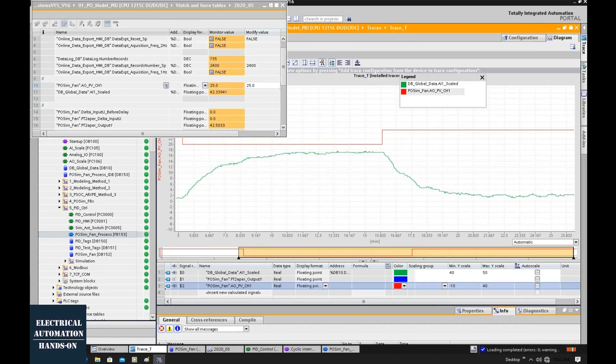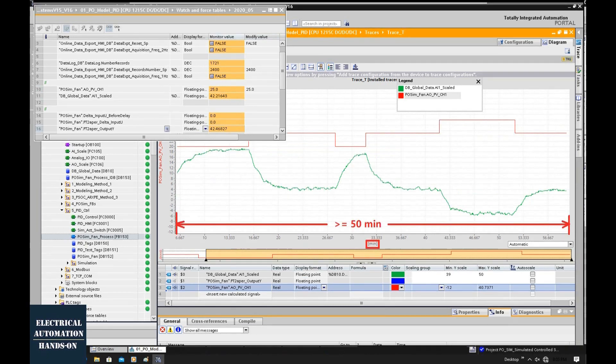We also need two features from the control system: online trend and data record. The online trend function helps us visualize our process behavior, for example the step response. We need to see how quickly or slowly our process is changing.